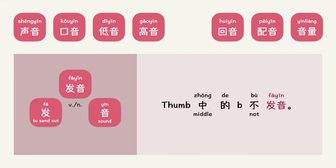To send out sound — what do you think 发音 means? This example says the letter B in the word 'thumb' is not pronounced. 发音 means to pronounce as a verb, and pronunciation as a noun.